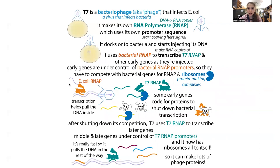Now we know where T7 RNA polymerase comes from, and you can buy it commercially or express and purify it yourself. I'm actually planning to express and purify it myself for some in vitro transcription work. Many papers suggest it's worth making your own — you get higher activity, higher concentration, so you don't need to add as much. It's apparently a simple purification with high yield, so you should only have to do it once and have enough for a long time.